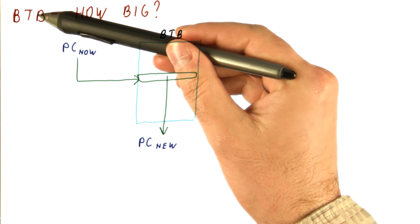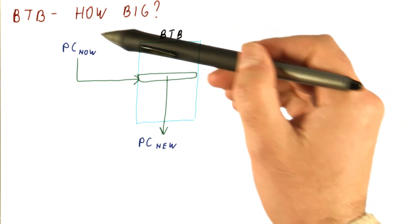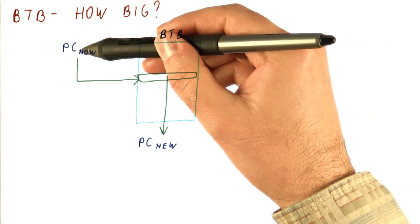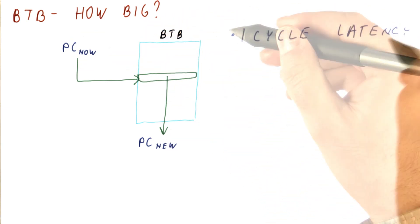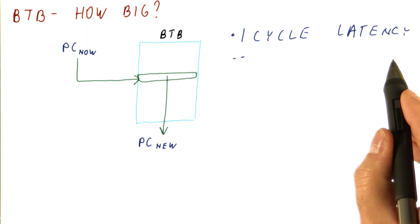But there is a problem with our BTB. How big does it need to be? We want it to, in one cycle, given the current PC, predict a PC. So it needs to have a single cycle latency. That means we want it to be really small.